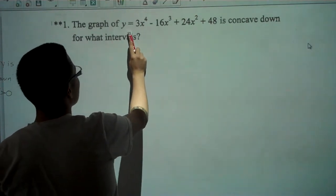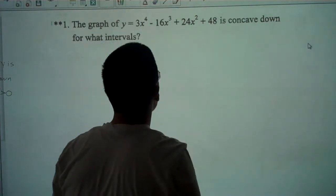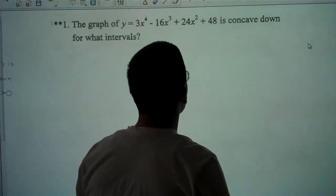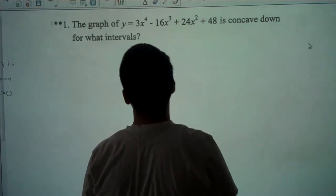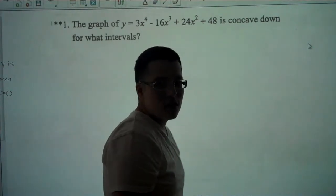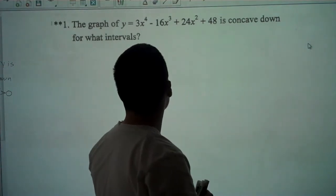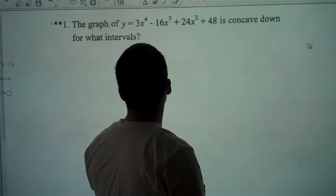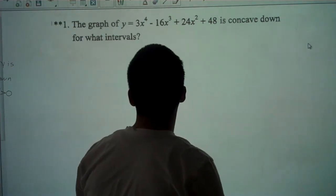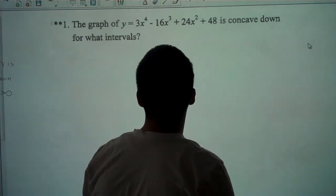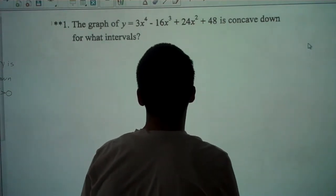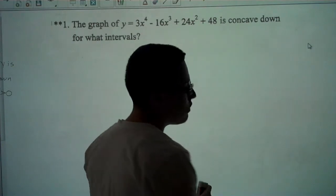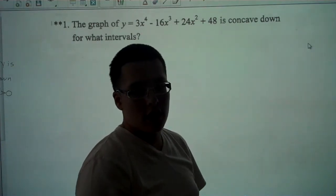The graph of y equals 3x to the 4th minus 16x cubed plus 24x squared plus 48 is concave down for what intervals? For this, you have to look for the y double prime and then you have to set it equal to zero in order to find your points of inflection. Then you have to see whether it's positive or negative.